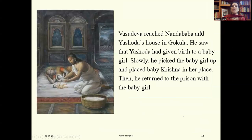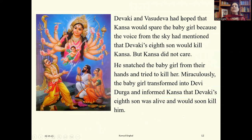Vasudeva reached Nanda Baba and Yashoda's house in Gokul. Yashoda had just given birth to a baby girl. He picked the baby girl up, placed Krishna in her place, exchanged the babies, and then returned to the prison with the baby girl. Devaki and Vasudeva had hoped that Kanz would spare the baby girl because the voice from the sky had mentioned that Devaki's eighth son would kill Kanz, but Kanz did not care and decided to kill the baby girl anyway.